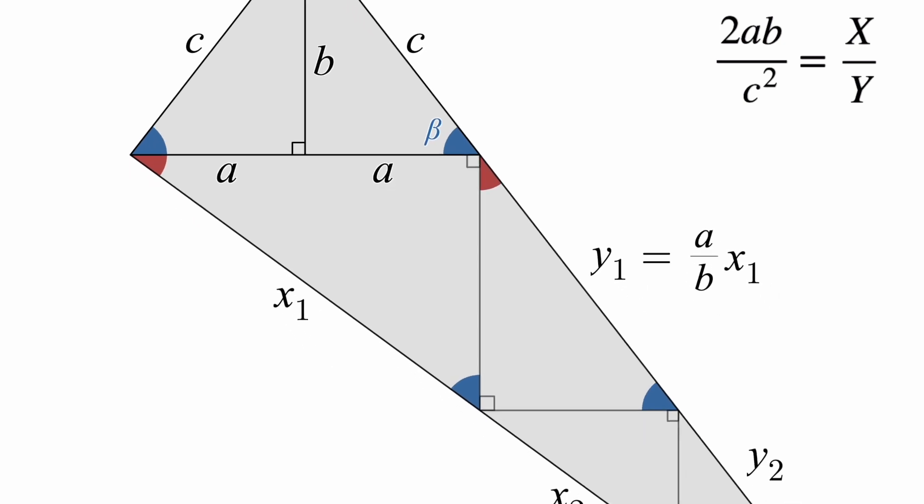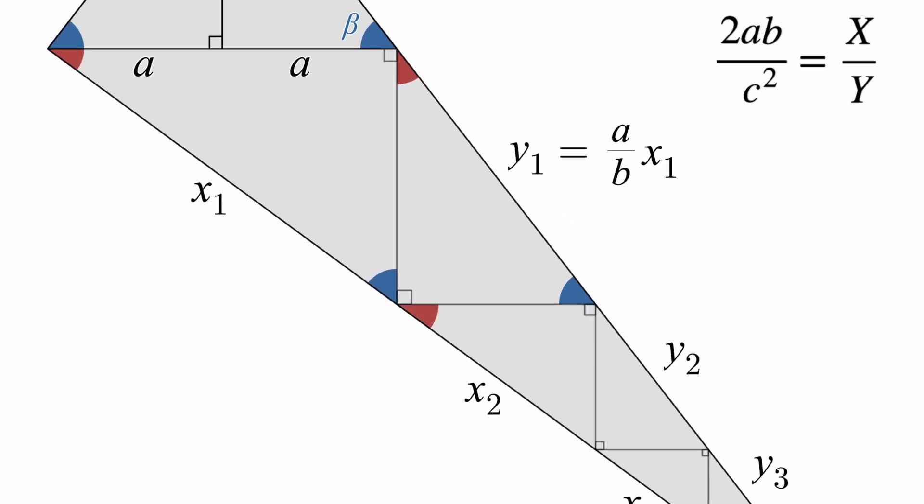Moving on to the third triangle, the exact same reasoning tells us that this is also a similar triangle. And again, the shorter leg of the second triangle is the same line as the longer leg of the third. So, again, the ratio between them is a over b. And that means the ratio between the first and third triangles is a squared over b squared, since we've applied the ratio a over b twice. So, x2 is a squared over b squared times x1.